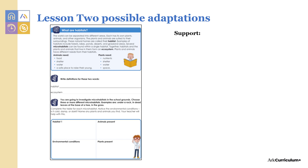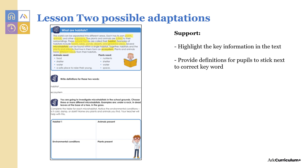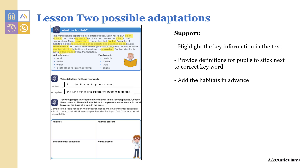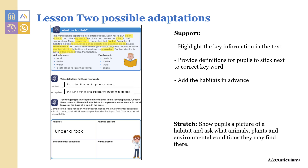In lesson two, pupils need to read some text and undertake two investigation activities. Support them by highlighting the key information in the text, by providing definitions for pupils to stick next to the correct keyword, and by adding the habitats in advance. Stretch pupils by showing them a picture of a habitat and asking what animals, plants, and environmental conditions they may find there.